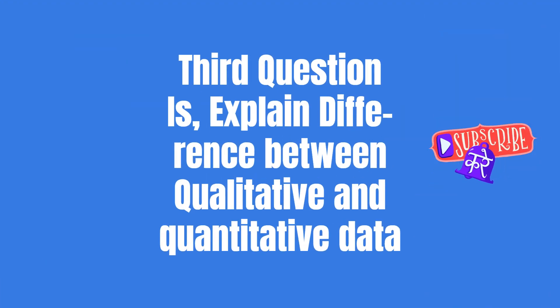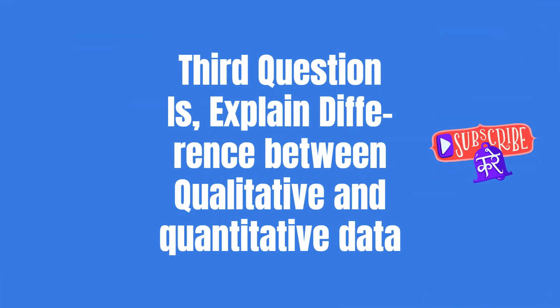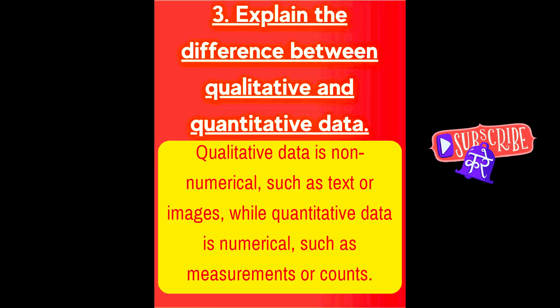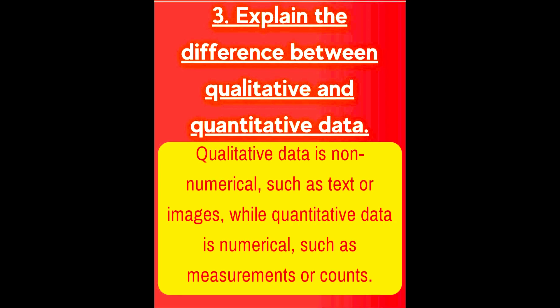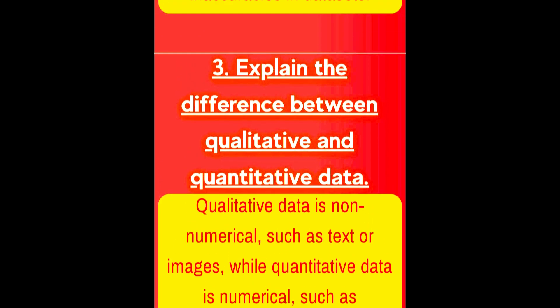Third question is, explain the difference between qualitative and quantitative data. Qualitative data is non-numerical, such as text or images, while quantitative data is numerical, such as measurements or counts.